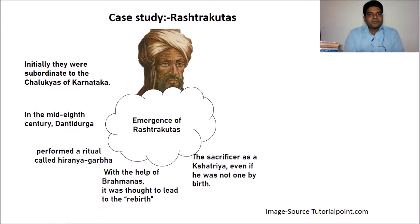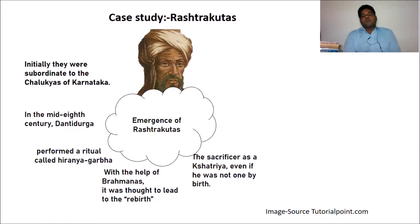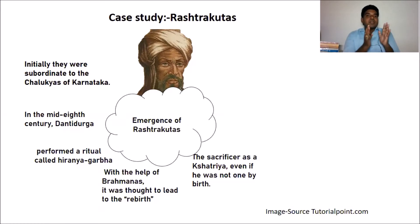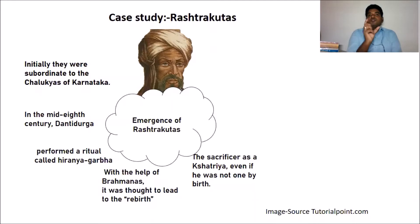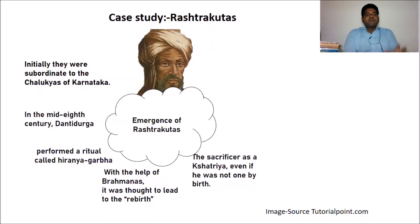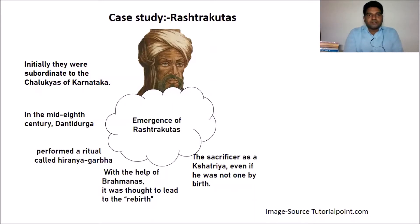We have taken an image of Danti Durga, which is taken from the website tutorialspoint.com. Initially, the Rashtrakutas were subordinates to the Chalukyas of Karnataka. As we discussed in the previous video, they used to work as warrior chiefs, and the king used to recognize them.